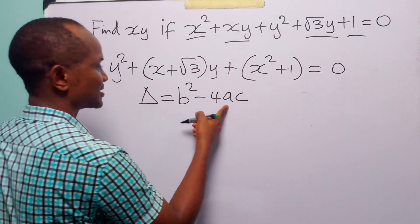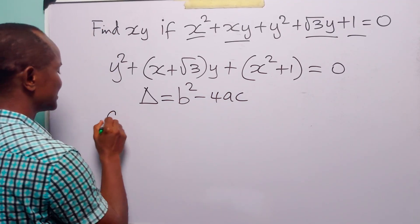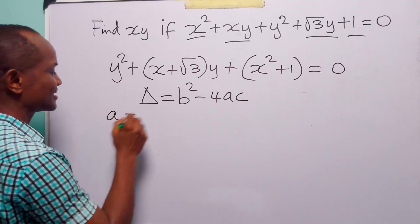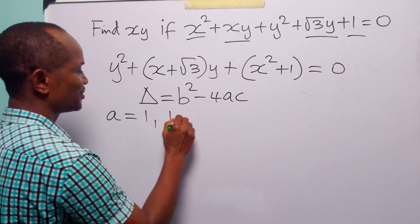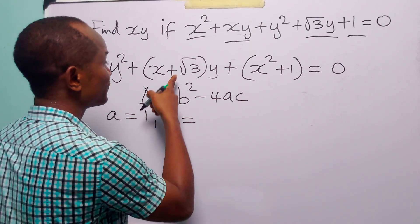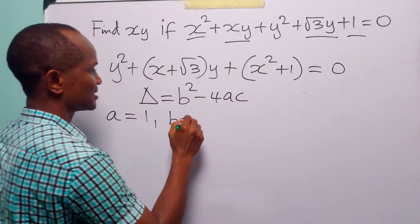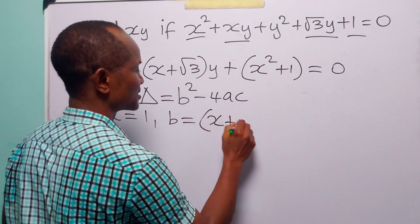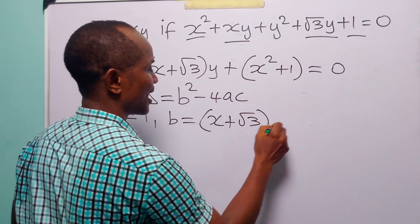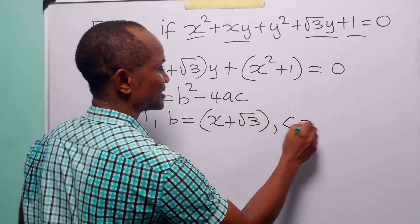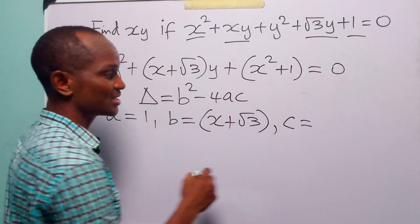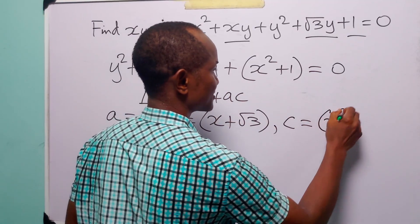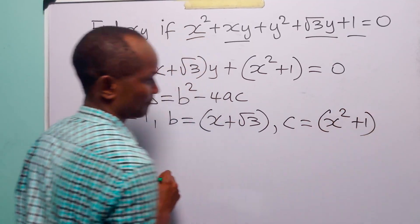You know that a is the coefficient of y squared, which in this case is 1. Now b is the coefficient of y, which is equal to x plus root 3. And c is the constant term, which in this case is x squared plus 1.